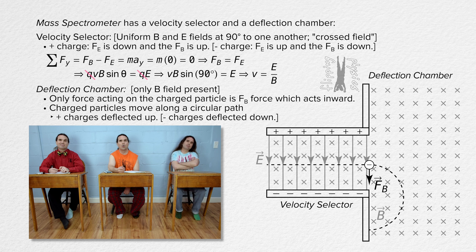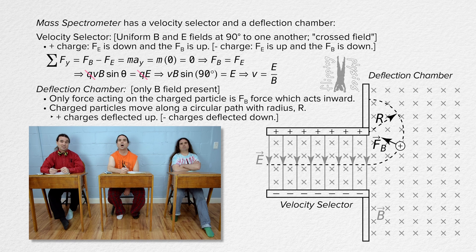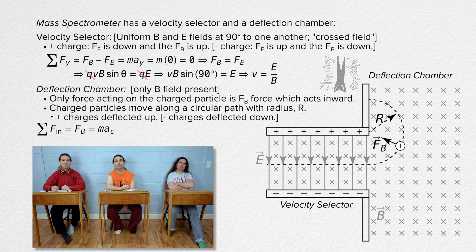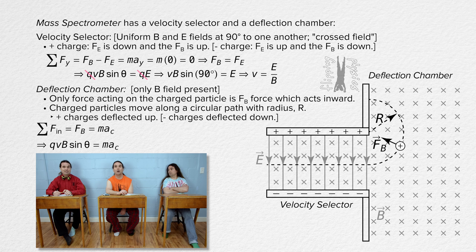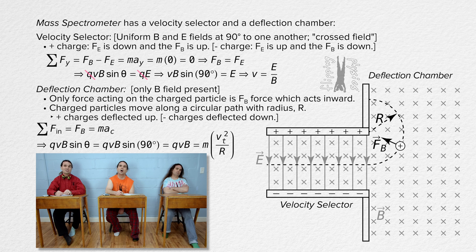Well done. Please analyze what happens to a positive charge in the deflection chamber which moves along a circular path with radius of curvature R. Because the positive charge is moving in a circle, let's sum the forces in the in-direction. The only force acting inward is the magnetic force and the acceleration in the in-direction is centripetal acceleration. The magnetic force is charge times velocity times magnetic field times the sine of the angle between the direction of the velocity and the direction of the magnetic field, and that angle is always 90 degrees. Since we already have an equation for the linear tangential velocity of the charges, let's use tangential velocity squared over radius for centripetal acceleration.